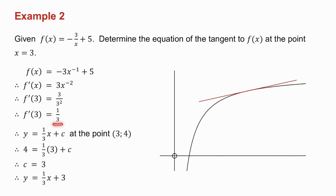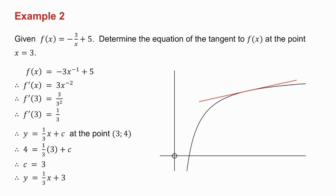I know my gradient is a third, so y equals a third x plus c. At the point 3, 4: in place of x goes 3, in place of y goes 4, and I get the equation of the tangent. I've drawn the graph just to give you a better understanding — it's not part of the question, but at least you can visualize it. I've drawn my hyperbola; I want the tangent at x equals 3, and there's my tangent. I got the equation y equals a third x plus 3.